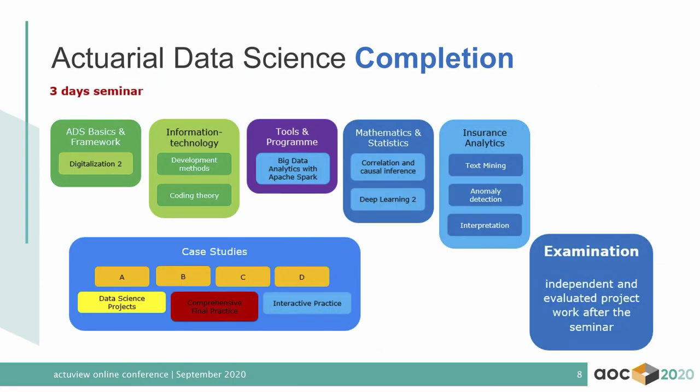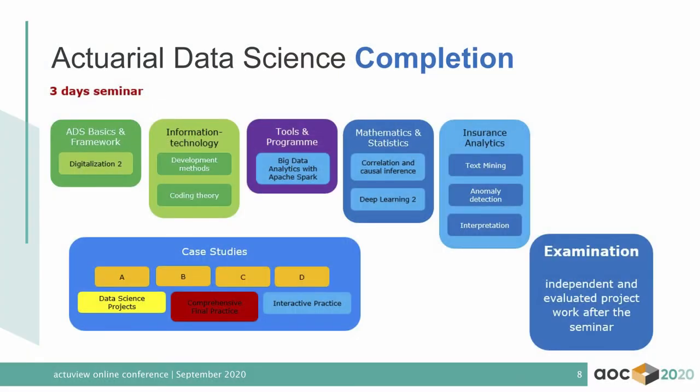Based on this, we go into the last seminar, Actuarial Data Science Completion, also called ADS Forum. Here we will learn special applications, the methods are deepened, and we complete all we have learned in the context of data science. Both modules, ADS Immersion and ADS Completion, are concluded with an evaluated project work — no written exam, a project work you have to do. If you complete all four modules and four examinations, then you can get the title of Certified Actuarial Data Scientist.